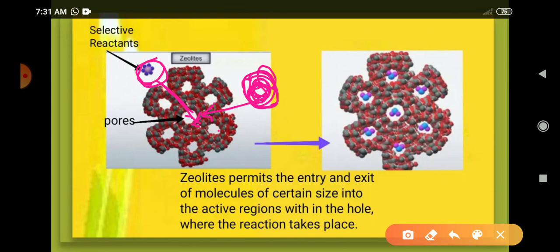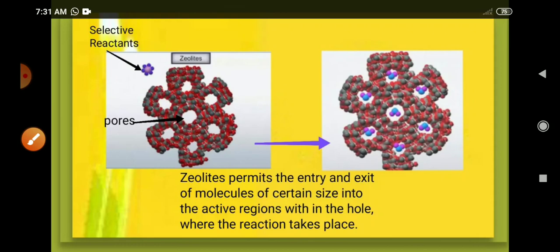Zeolites permit the entry and exit of molecules of certain size into the active regions within the holes where the reaction takes place. In the second figure you can see the particles are now in the holes.